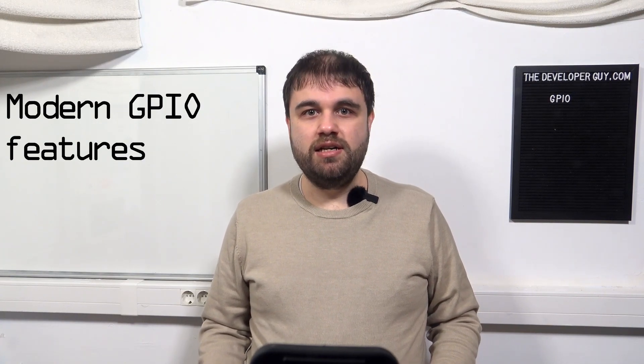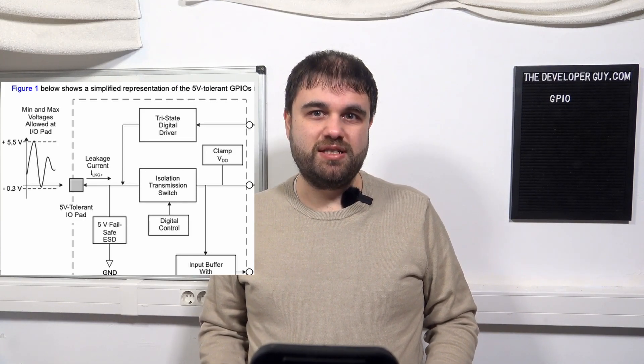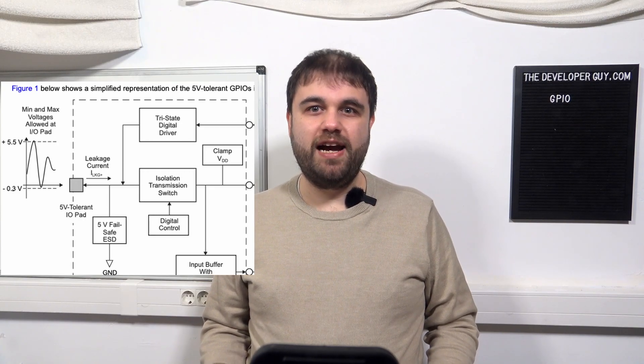Now let's look into current modern features. Modern microcontrollers can have some exciting features, but these are not universal — you may easily find a device without any of these. One interesting feature is tolerating higher voltages. Microcontrollers designed for 3.3V usually don't like 5V signals. Exceeding the absolute maximum voltage can fry the GPIO pins, or even worse — overloading can kill the whole microcontroller. However, some or all I/O pins may tolerate high voltages; the ADUC7034 tolerates even 18V. Of course, a device running at 3.3V cannot drive its output to this high level — they just don't die if these voltages are applied.